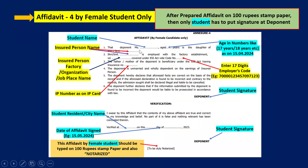Affidavit 4 is completed by the female student. Each space is marked with clear explanation. The first field is the dependent's name — the student's name. Then specify the age calculated as on 15th April 2024 in number of years. The insured person's name is employed with the factory or establishment — you should mention your organization or job place name. Under ESI Act, enter the 17-digit employer's code number. The student, as father's or mother's dependent, is a beneficiary under the ESI Act having insurance number — the IP number. The student has to sign in the specified places.